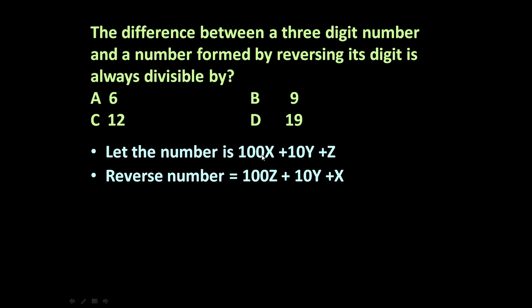Number 1 minus Number 2: the Y terms will cancel out, and we get 99X minus 99Z, which equals 99(X - Z). So 99(X - Z) is the difference of these two numbers.